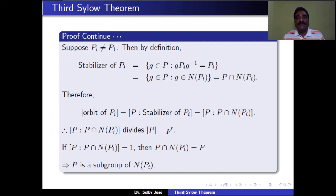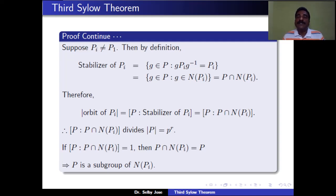Now take some Pt not equal to P1 — so P1 and Pt are two distinct Sylow P-subgroups of G. By definition, the stabilizer of Pi is the set of all g in P such that g*Pi*g⁻¹ = Pi. That means the stabilizer of Pi consists of those elements in P which fix Pi under conjugation, i.e., those g in P belonging to the normalizer N(Pi). So the stabilizer of Pi equals P ∩ N(Pi).